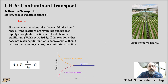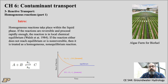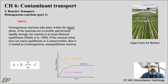Now for the introduction to homogeneous reactions. Homogeneous reactions take place in the liquid phase — it's a liquid-liquid phase with no solid interaction. For today, we'll look at equilibrium reaction theory. If the reactions are reversible — the simplest example being A plus B gives C — there can be a forward and a backward reaction.